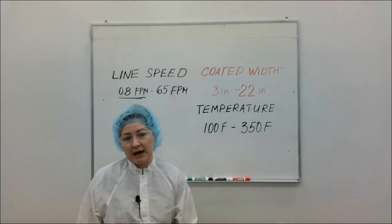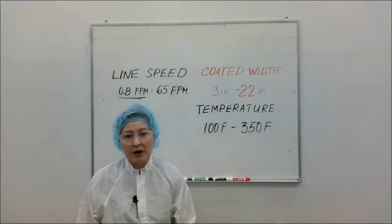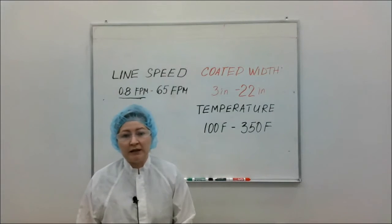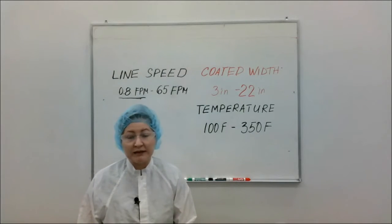For example, we can set our temperatures as low as 100 degrees Fahrenheit and we can go as high as 350 degrees Fahrenheit. For our coated width, we can coat as narrow as three inches wide and as wide as 22 inches wide.